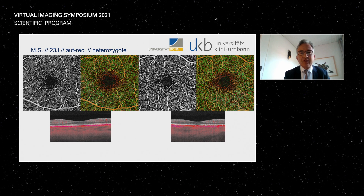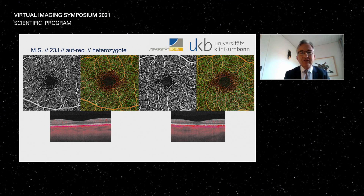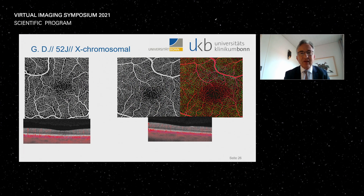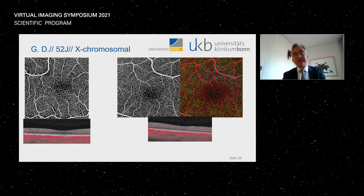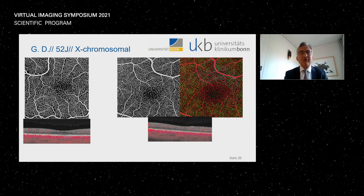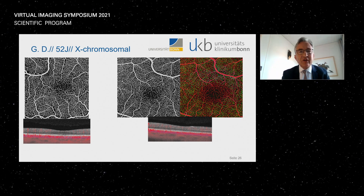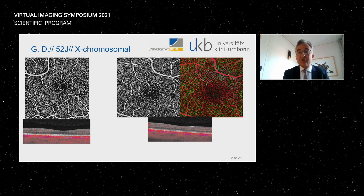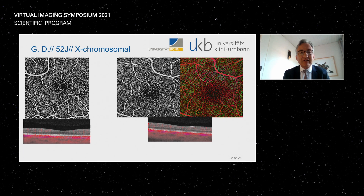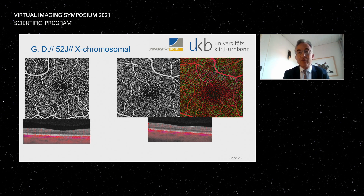On OCT angiography, the foveal avascular zone is present and normal in this heterozygous state. When we look across the full cohort of 28 eyes in Alport syndrome, there is huge variability in how vascularization of the central fovea is changed. In this 52-year-old patient with X-chromosomal Alport syndrome, also with 20/20 vision, you can see capillaries marching to the fovea where they shouldn't be.